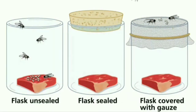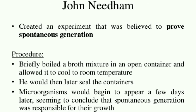The first jar, the unsealed jar, showed some presence of maggots. Whereas the remaining two jars did not show the presence of maggots. This confirmed that spontaneous generation does not happen here, and thereby Redi was able to reject the spontaneous generation theory.